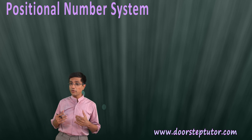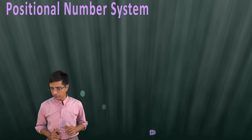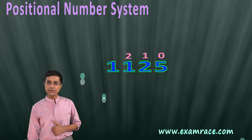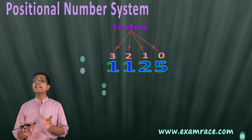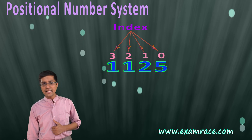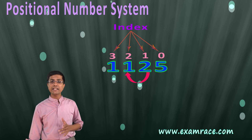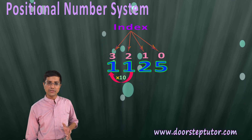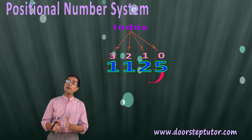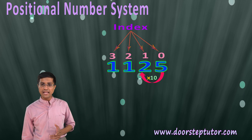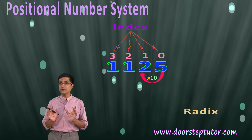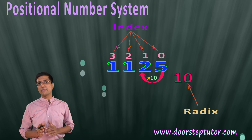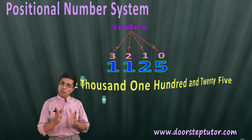Let's move back to the positional number system. Here is a four-digit number — it has four digits. The digits are labeled with indices 0 to 3. Digit 5 is at index 0. Each time we move a digit to the left, the digit increases its value by ten times — so if it is hundreds and moves to the left, it becomes thousands. The number increases its value by ten times as we move it from one place to another. That's why the decimal number system has a radix of ten. The number itself is 1125.